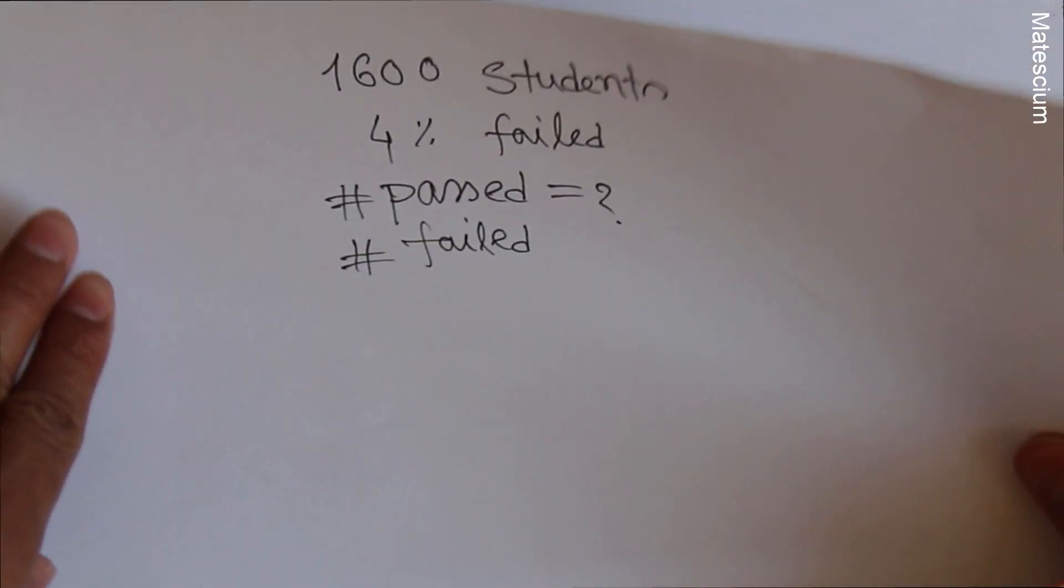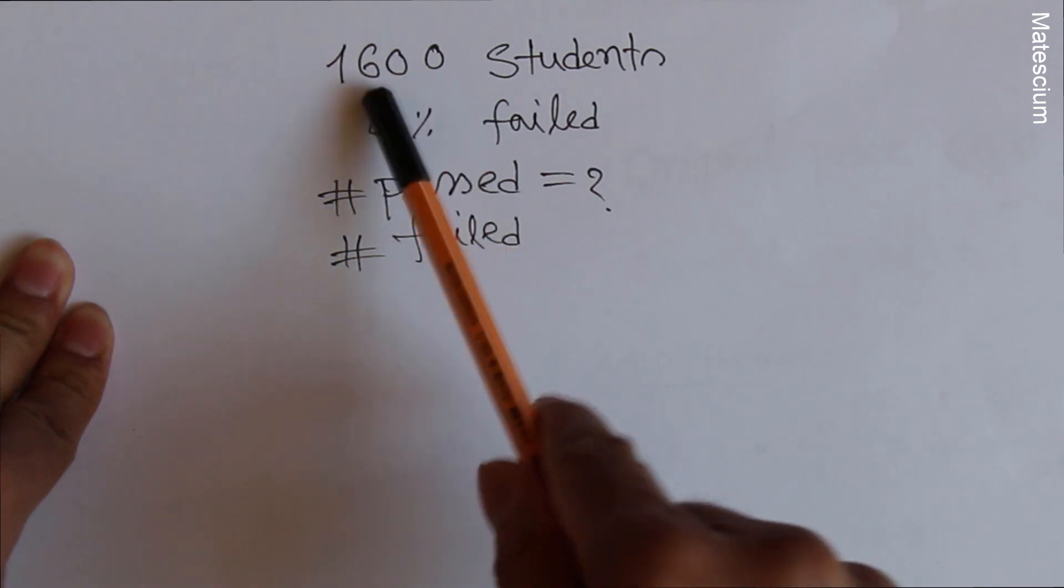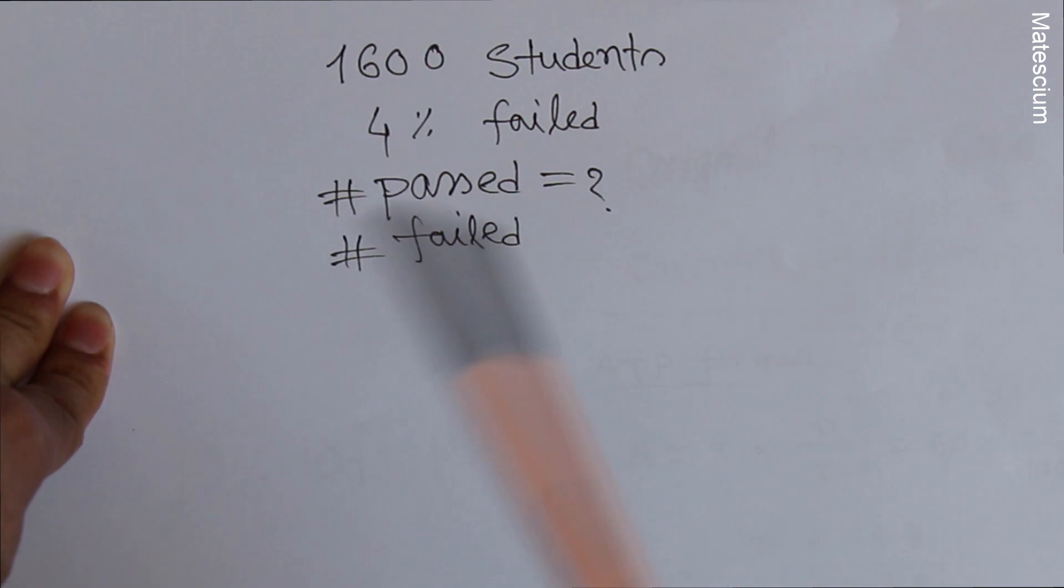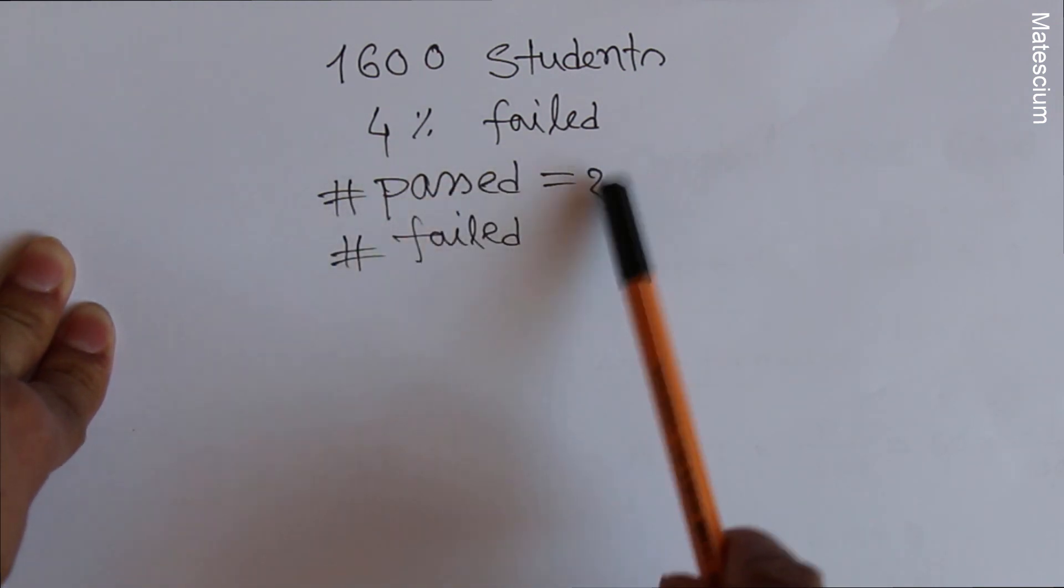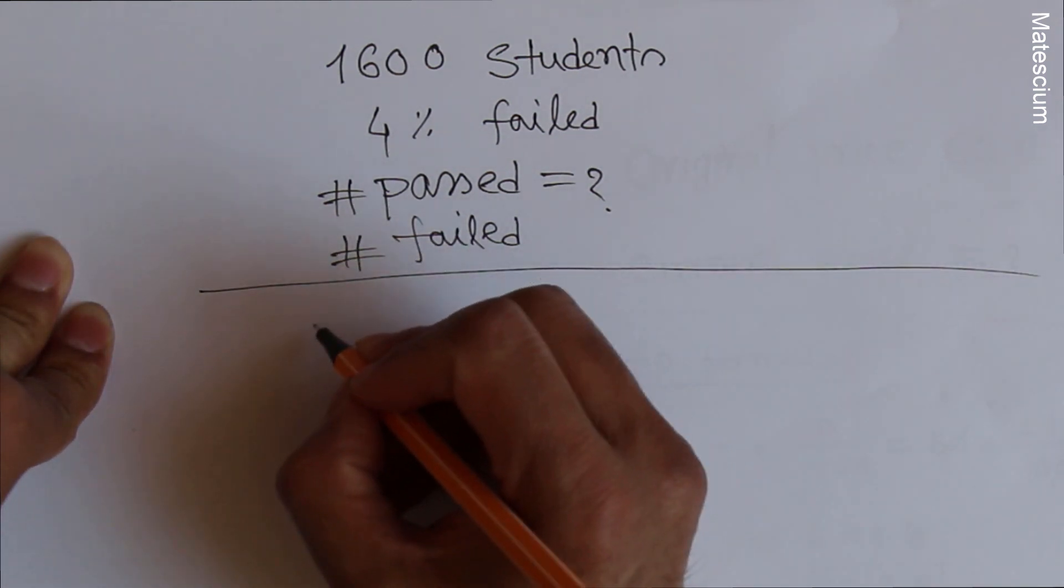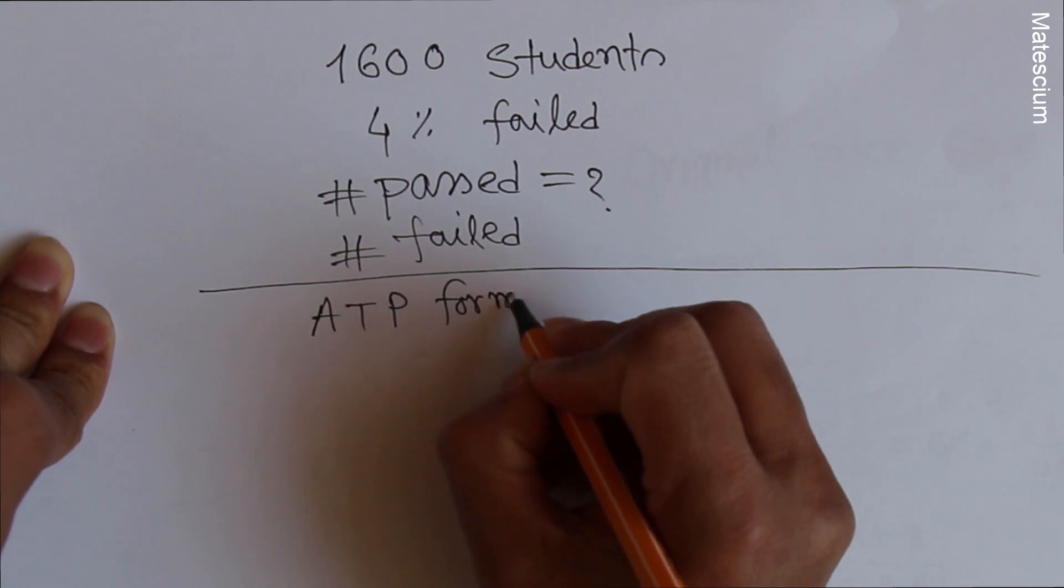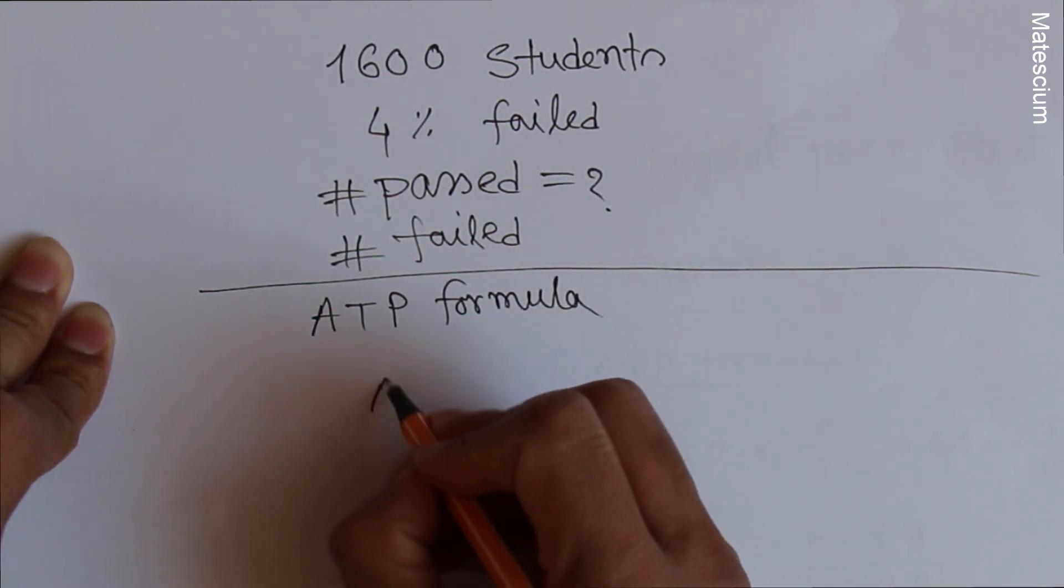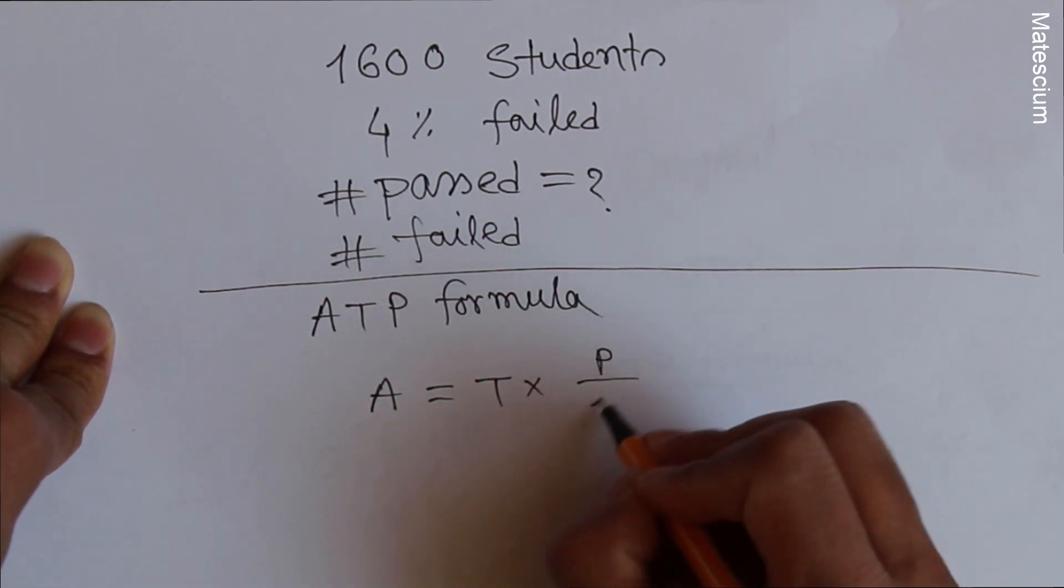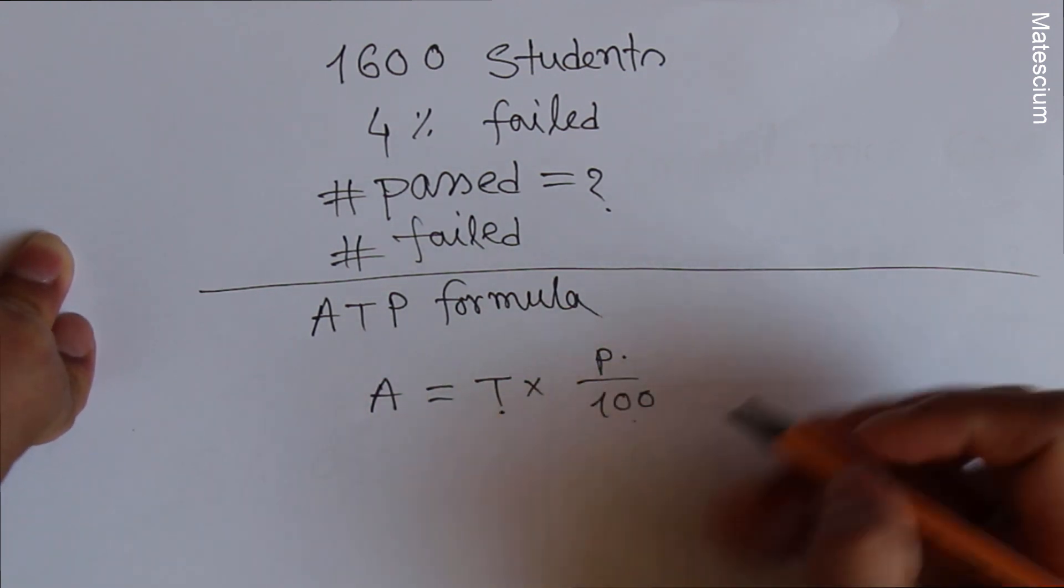Let us consider a school has 1600 students. Out of 1600 students, 4% students are failed. Question is how many students are passed and how many students are failed? We can apply the same ATP formula. That means A equals T times P over 100 where T is total number, P is percentage over 100.